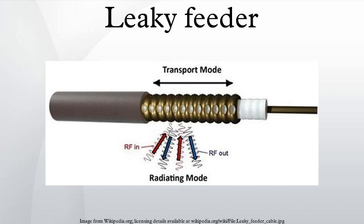In London, London Underground uses a leaky feeder system for their internal communication network. However, the emergency services communication system was not compatible and did not work underground. The fact that this situation continued to exist after the 1987 King's Cross fire was criticized in reports from the 7 July 2005 London bombings, where it hampered rescue efforts.